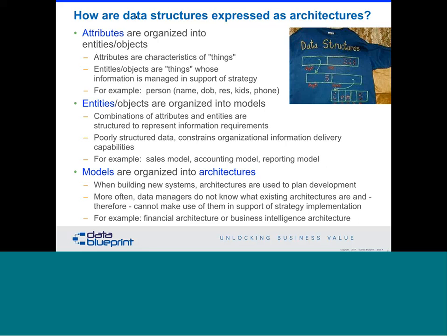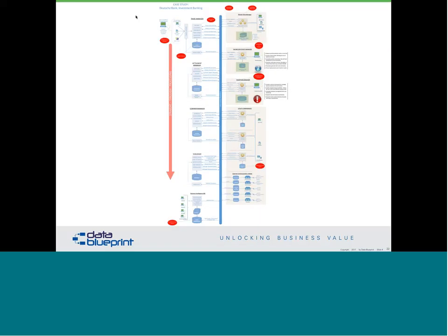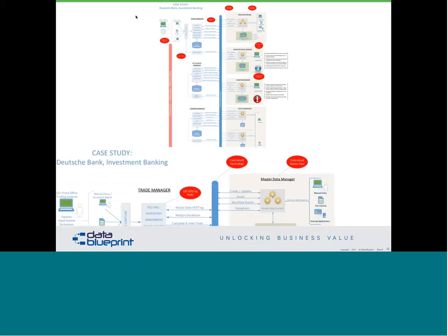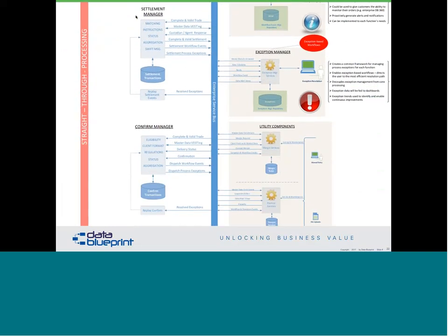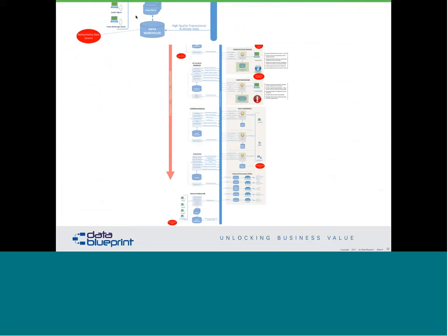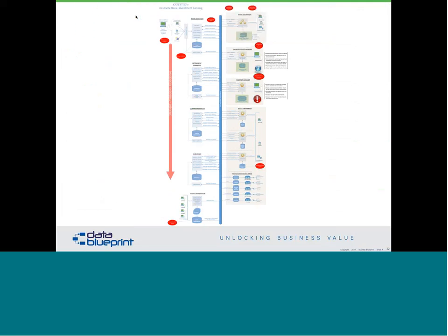A reports model may pull from several different applications to merge them together. The overall guidance of all this is the architecture — pulling it all together into something like a financial architecture or a business intelligence architecture. Architectures are very hard to conceptualize, but they are comprised of these smaller things put together in larger constructs in even larger constructs, all purposed to work together. The example shown was a back office trading system from a large bank — about a five-year effort to re-architect, done exactly in this fashion.